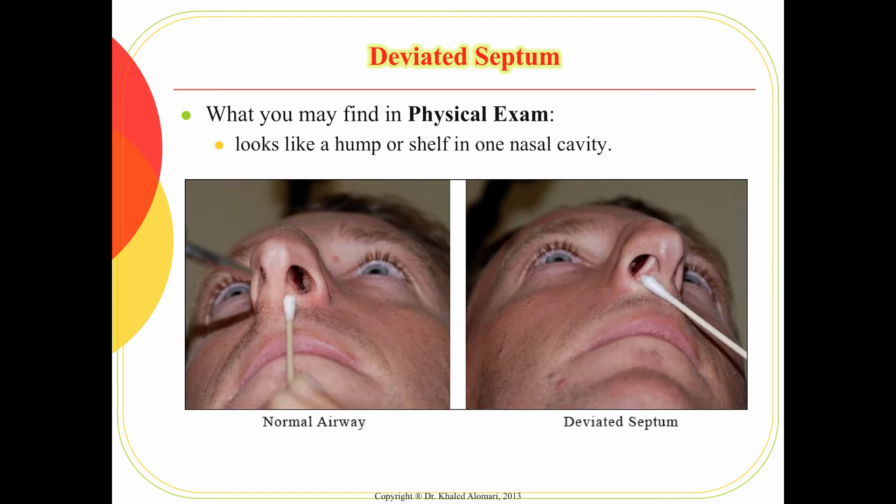In the physical examination, the classical finding is what looks like a hump or shelf in one of the nasal cavities. It will be in one cavity because of the deviation, which can happen to the left or to the right. So you need to compare both nares.